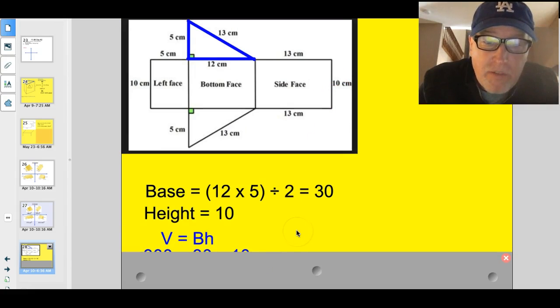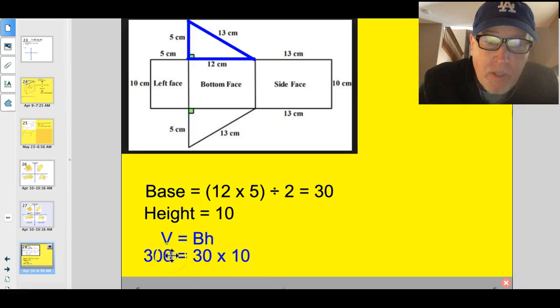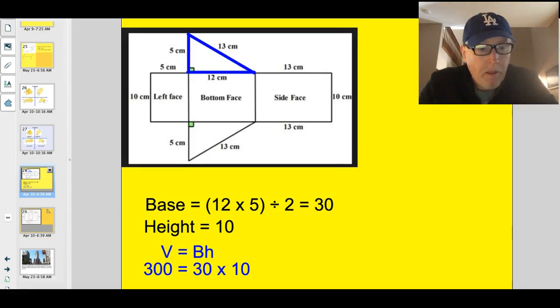Now, think when you folded these two triangles up, this would be the height of that rectangle. It's 10 centimeters. So base times height. Volume equals base times height. Would be the 30 that we had for the base times the height. And 300. I just took and flipped this around and put the volume on the other side. Because sometimes we write the formula that way. Instead of big base times height equals the volume. We'll write volume equals big base times height.